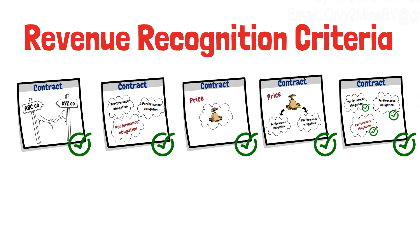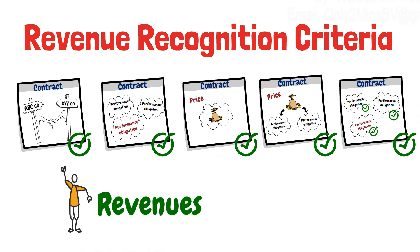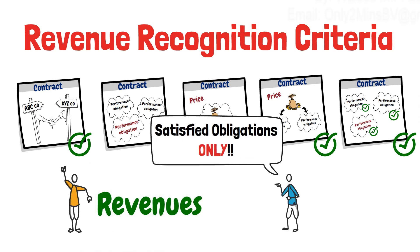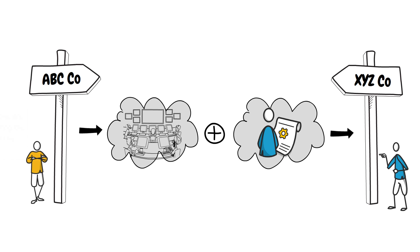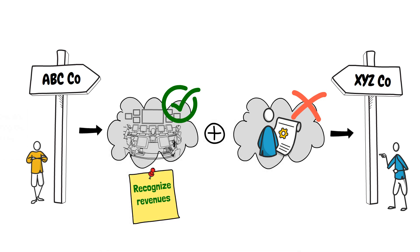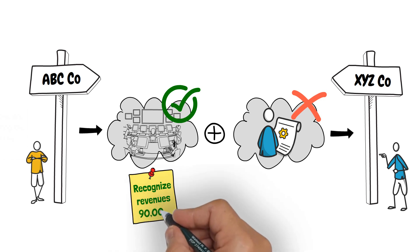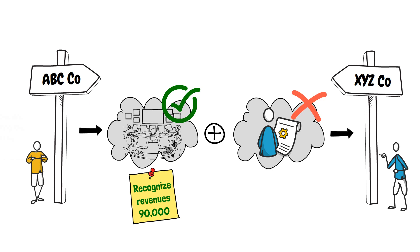Once all the previous conditions are met, revenues can be recognized only for satisfied performance obligations. In our example, let us assume that ABC completed the installation of the security system but did not yet perform any maintenance service. Here, ABC can recognize revenues only from the system installation as it has already satisfied that obligation, so it will record revenues of $90,000, which is the price allocated to the system installation obligation.